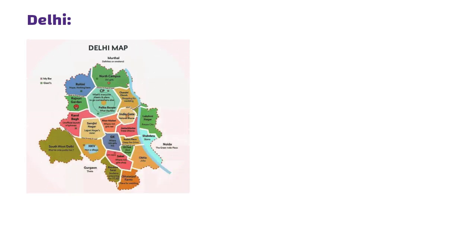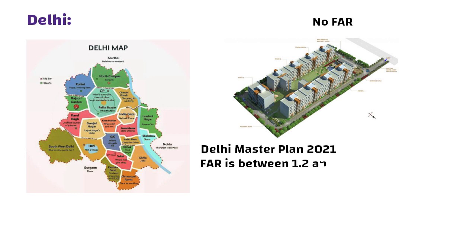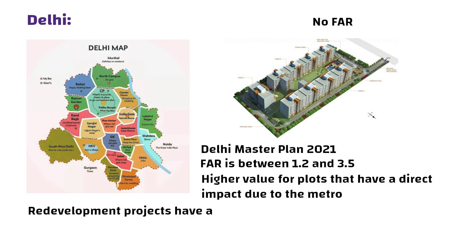Delhi: The national capital has not imposed FAR on group housing. According to the Delhi Master Plan 2021, the FAR is between 1.2 and 3.5. The governing body allows a higher value for plots that have a direct impact due to the metro. Redevelopment projects have a value of 4.